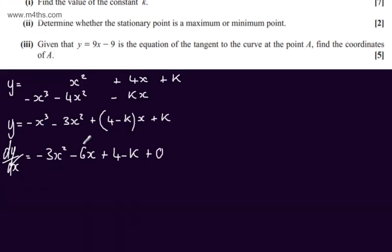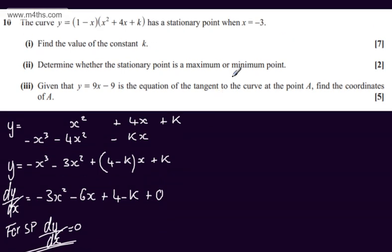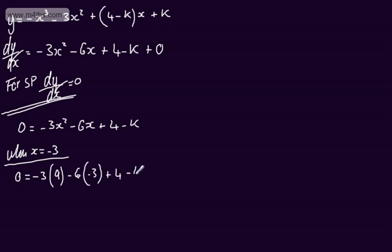For the stationary point, the gradient function dy by dx will be equal to 0. So I can set this equal to 0: 0 equals minus 3x squared, minus 6x, plus 4, minus k. I'm now going to substitute in x equals minus 3. So when x equals minus 3, we have 0 equals minus 3 times 9, minus 6 times minus 3, plus 4, minus k. Adding k to both sides, k equals minus 27, plus 18, plus 4, which gives k equals minus 5.